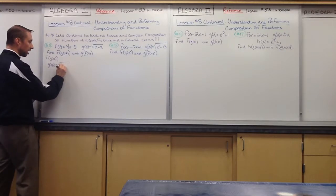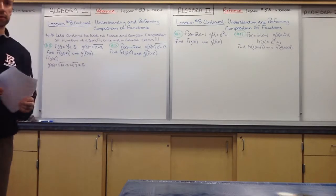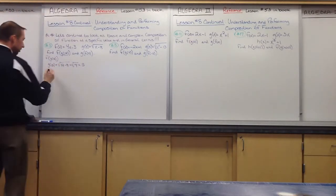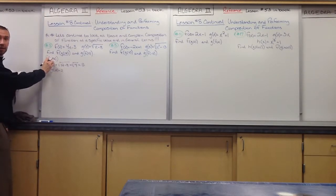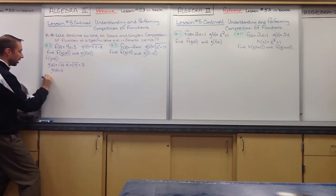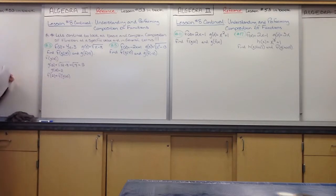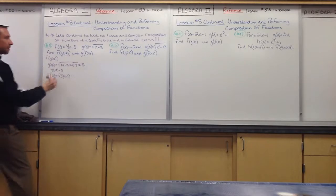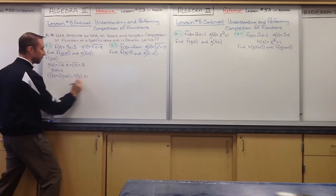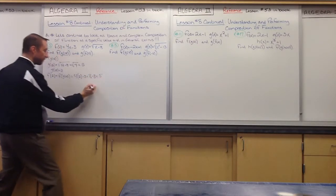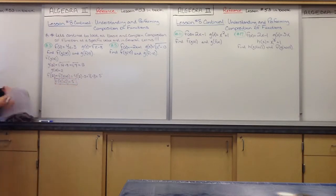So it becomes the square root of 12 minus 8, which is the square root of 4, which is 2 — we take the positive. So g(12) is equivalent to 2. That makes it easier to plug into f. We plug 2 into f(x), getting 4 times 2 minus 3. 4 times 2 is 8, minus 3 is 5. So my f(g(12)) is equal to 5.